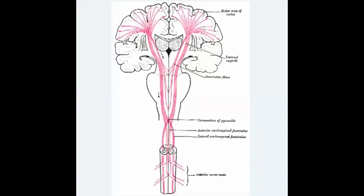The upper motor neurons start here, with the cell body in the primary motor cortex. There are cell bodies representing different regions such as the trunk, the legs, and the arm. This descends ipsilaterally — as you can see, there is ipsilateral descension — going through the internal capsule until it reaches the point where it decussates at the caudal medulla.